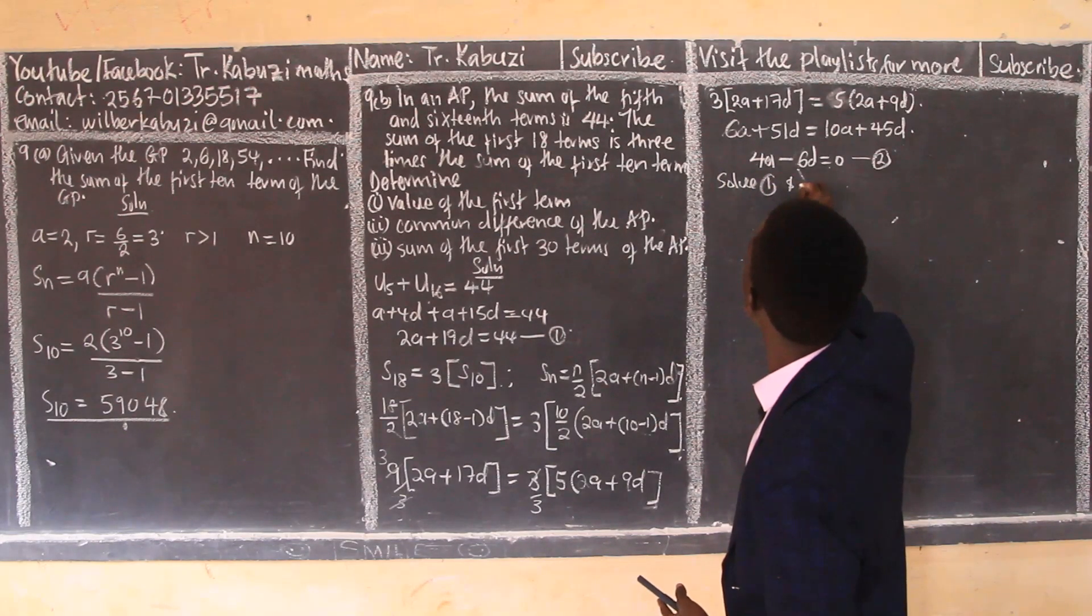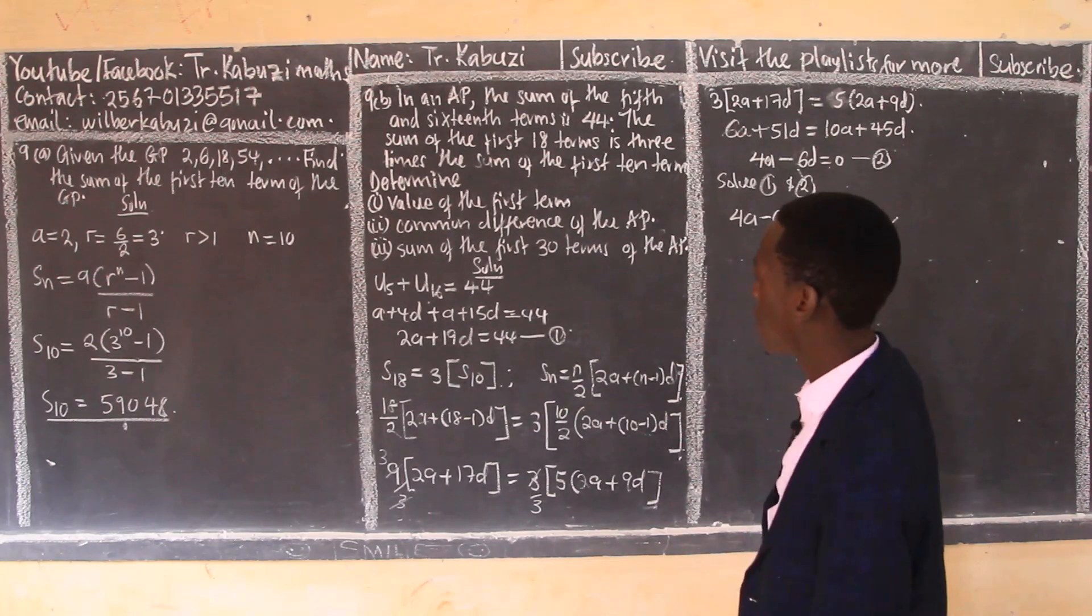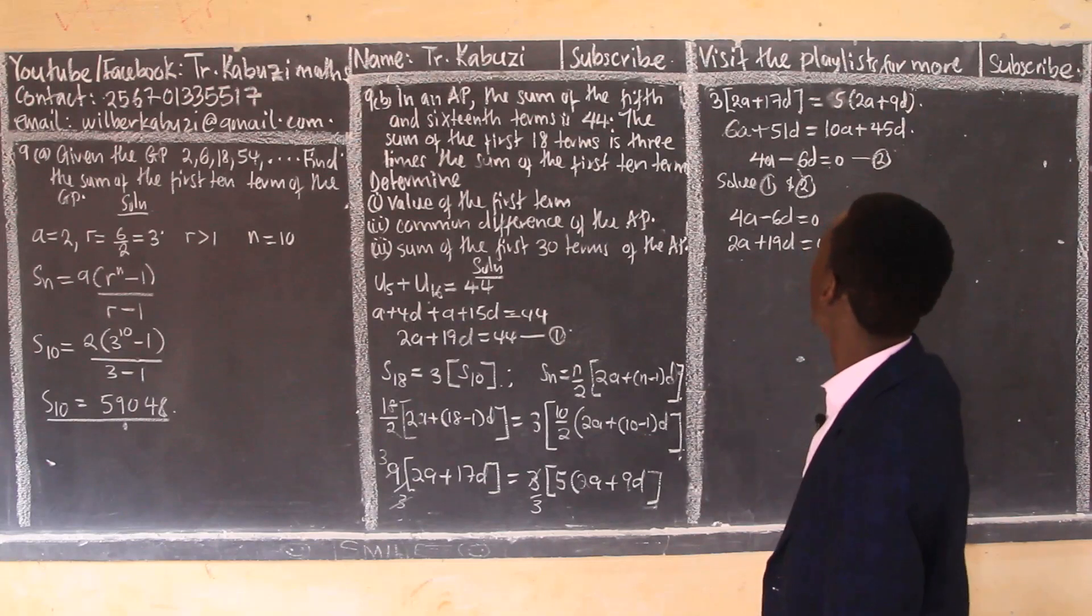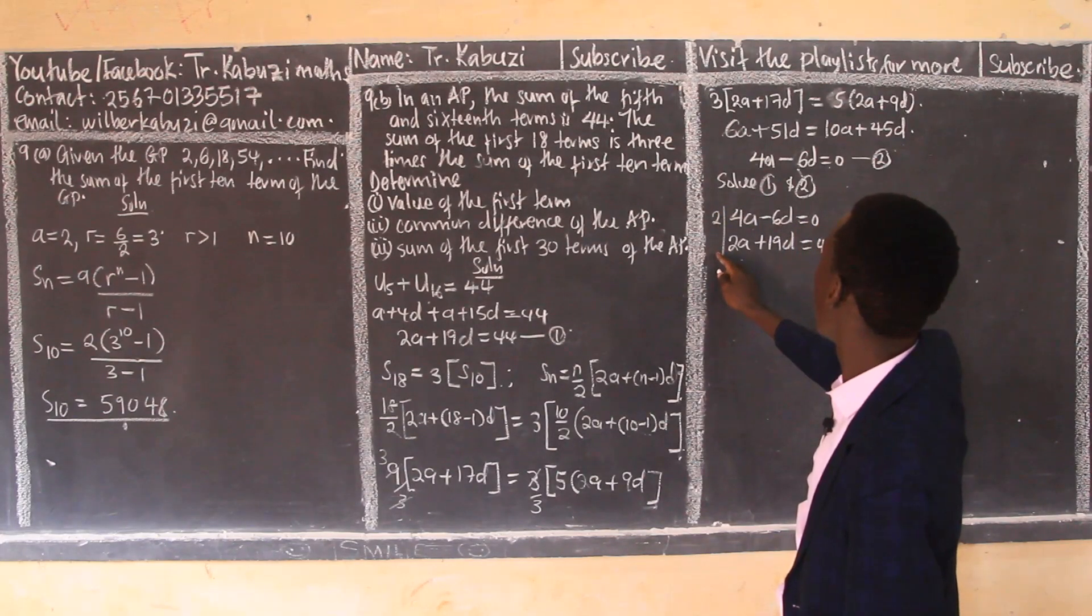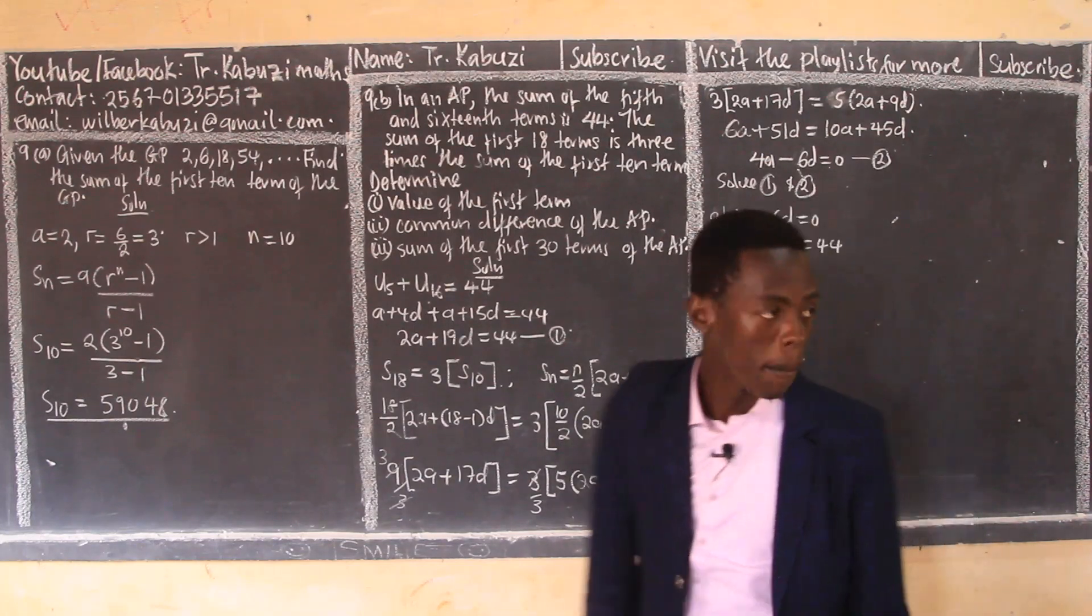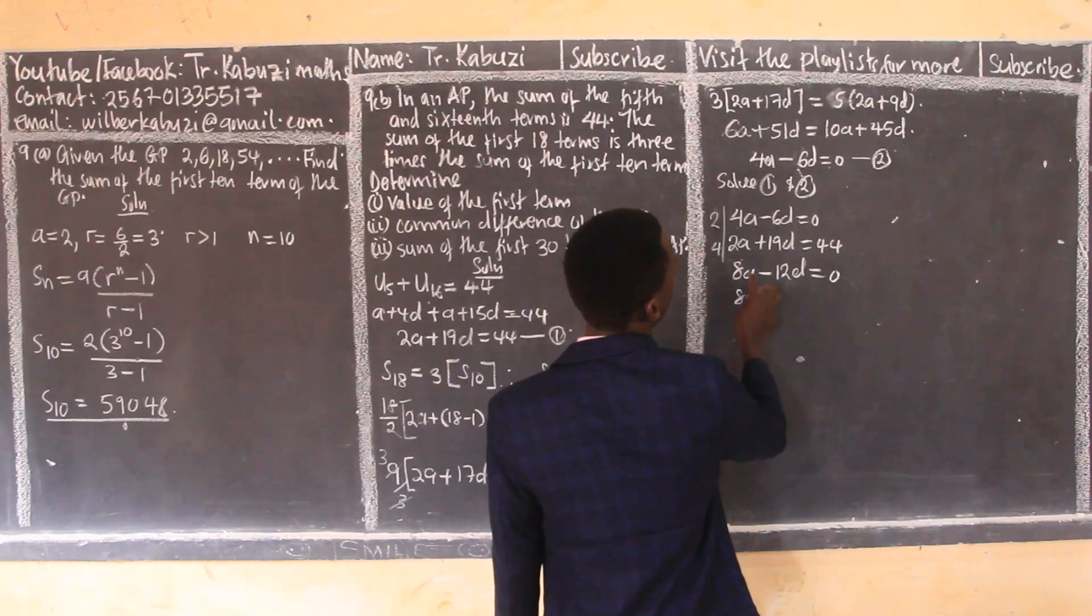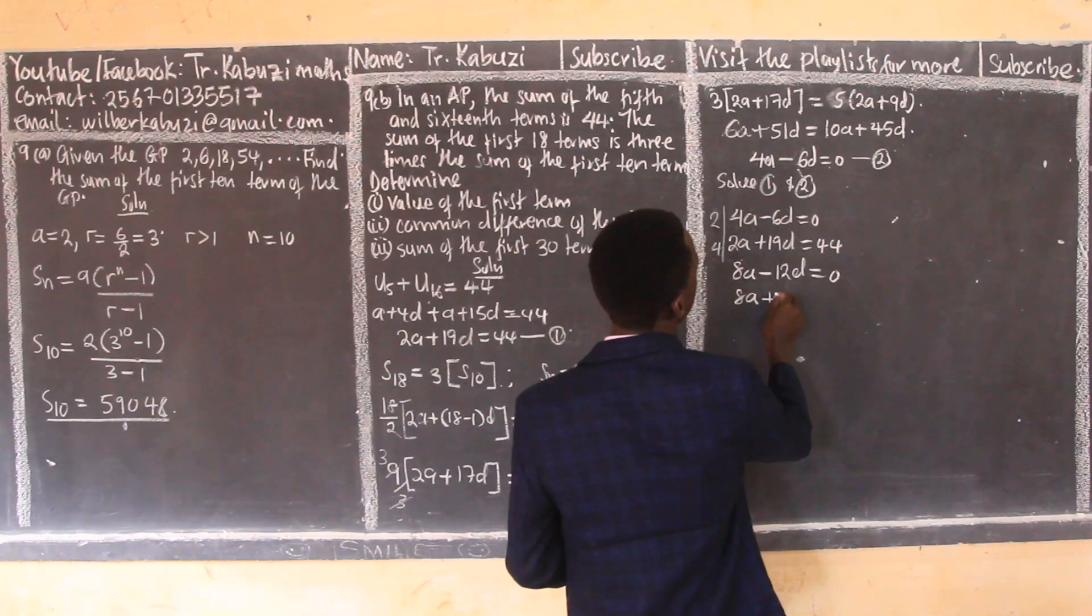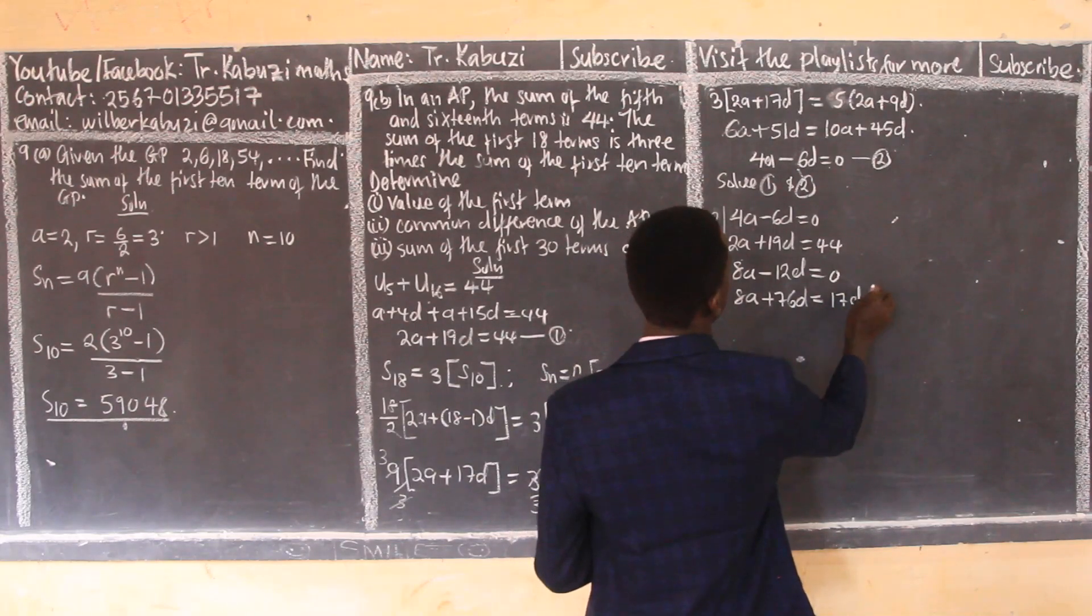So if I start with this one, I have 4a minus 6d equals 0. Then from here I can bring in this one: 2a plus 19d equals 44. You see here, I need to multiply here by 2. So multiplying here by 2 and I multiply here by 4, this will give me 8a minus 12d equals 0. This will give me 8a, then that is 19 times 4 which is plus 76d, equals 4 times that, I'll get 176.